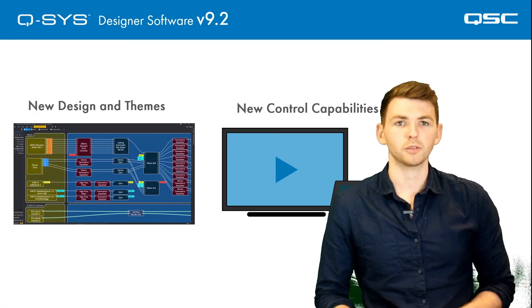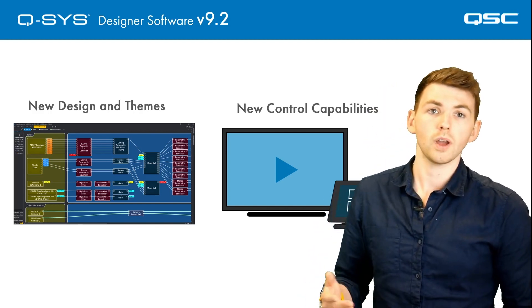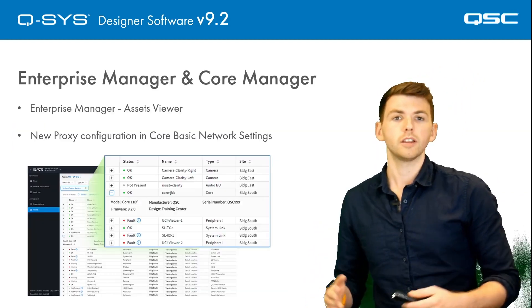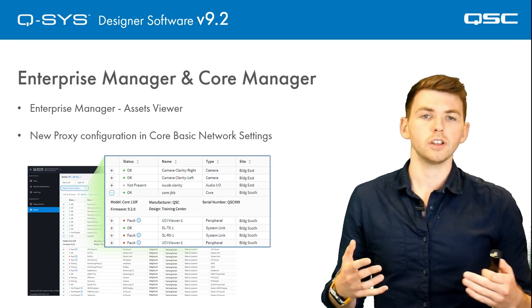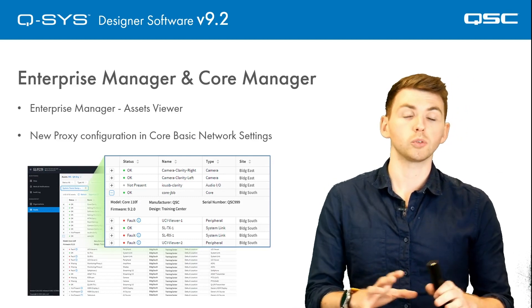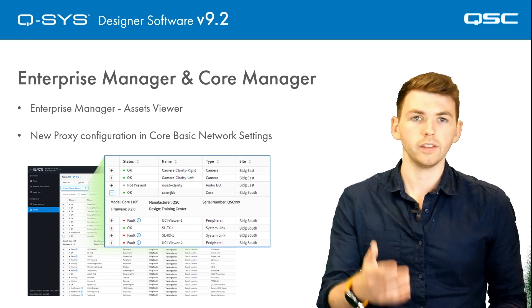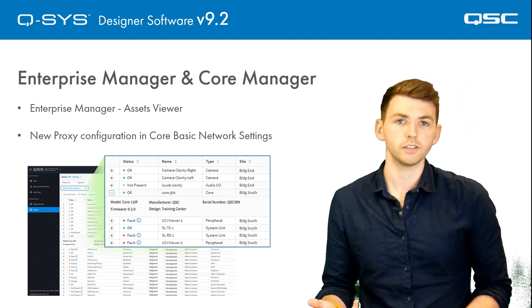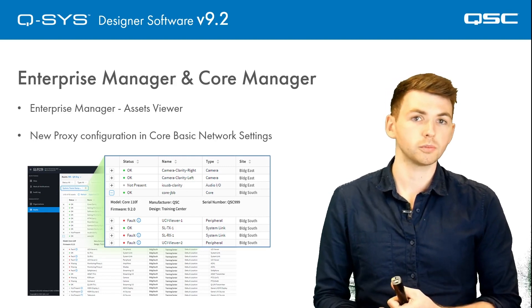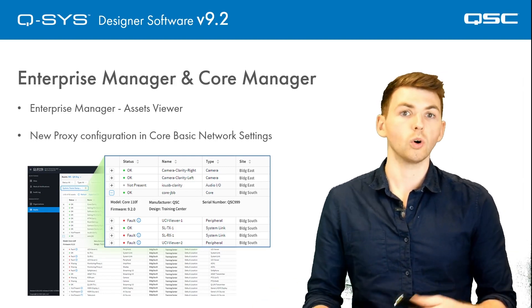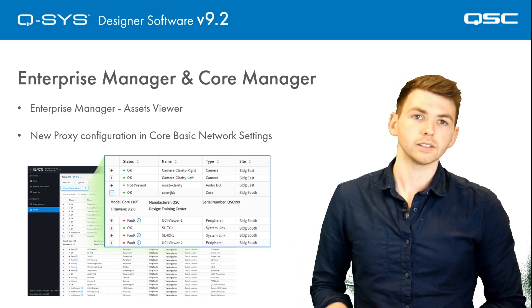So there's a little look at dark mode and the new control features of QSYS. We also have some improvements to Enterprise Manager. There is a new Assets Viewer in Enterprise Manager, and the idea behind this is that it lets you see all of your AV peripherals throughout your entire organization that are managed by QSYS and Enterprise Manager. Whether these are third-party devices or native QSYS devices, you can now see them all in one place regardless of what system they're a part of, what site they're on, or what core they're connected to.